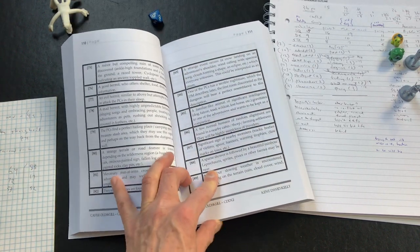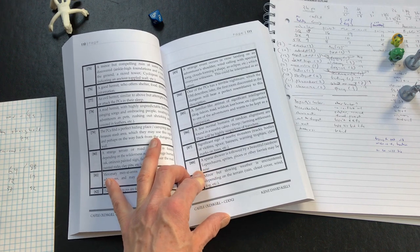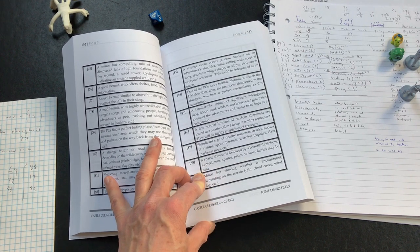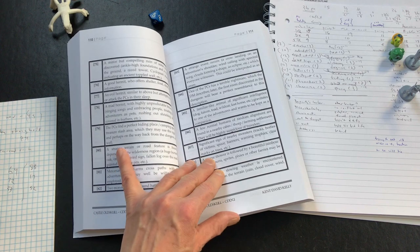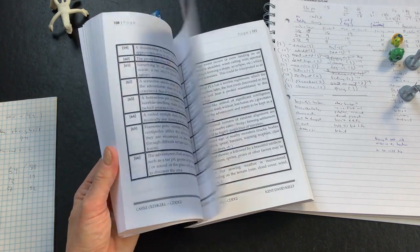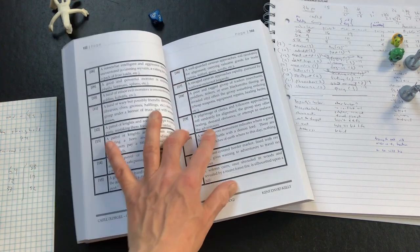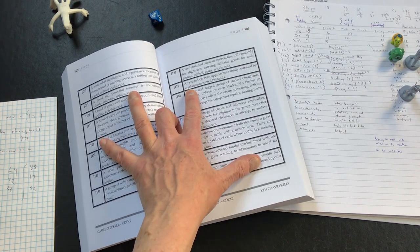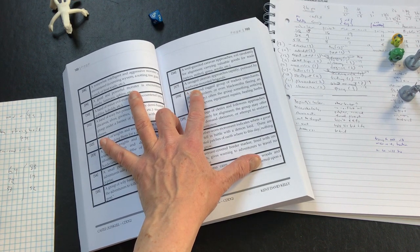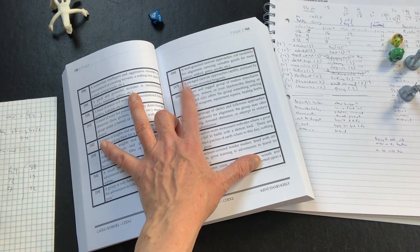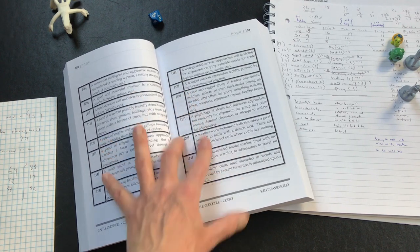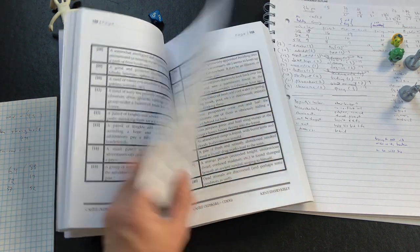88 - a sparse shower is followed by a beautiful rainbow. Leprechauns, sprites, pixies or other fairies may be near. 17 - a ravaged caravan approaches rapidly pursued by warhorse mounted brigands. That's good, it's going to bring some other people around.